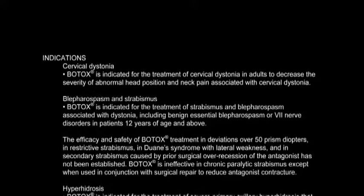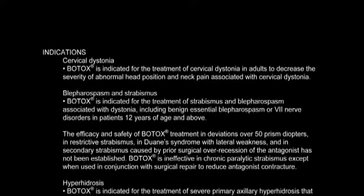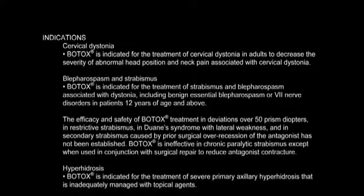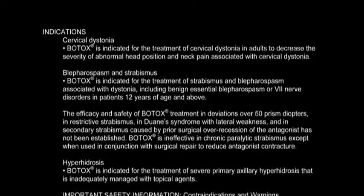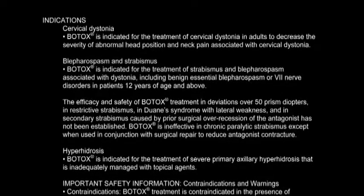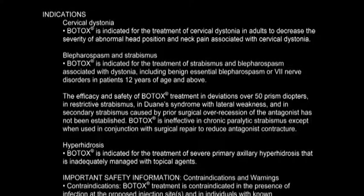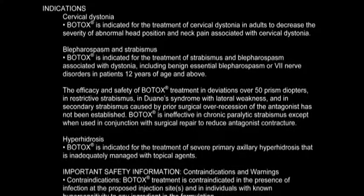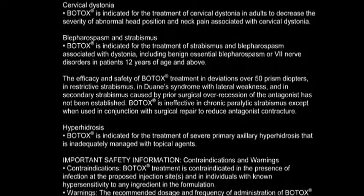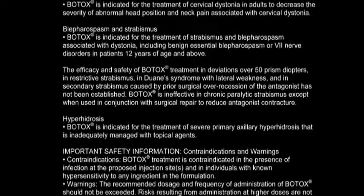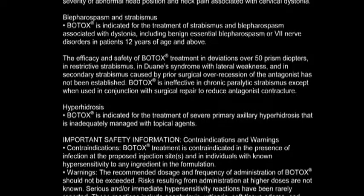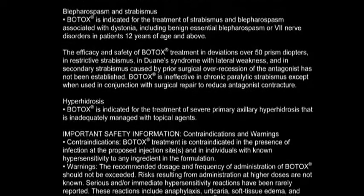Blepharospasm and strabismus: Botox is indicated for the treatment of strabismus and blepharospasm associated with dystonia, including benign essential blepharospasm or 7th nerve disorders in patients 12 years of age and above. The efficacy and safety of Botox treatment in deviations over 50 prism diopters, in restrictive strabismus, in Duane syndrome with lateral weakness, and in secondary strabismus caused by prior surgical over-recession of the antagonist has not been established. Botox is ineffective in chronic paralytic strabismus, except when used in conjunction with surgical repair to reduce antagonist contracture.